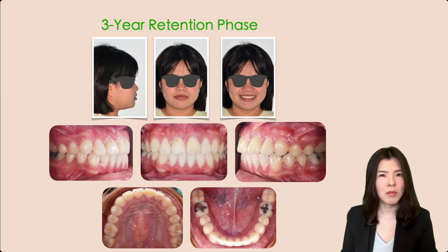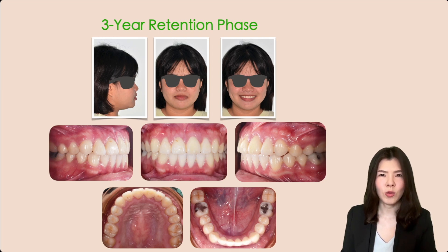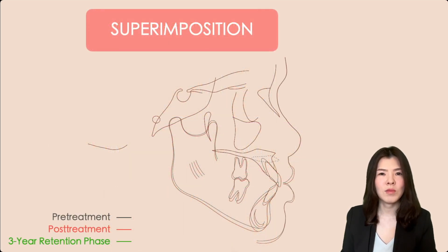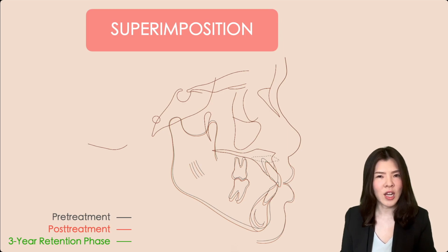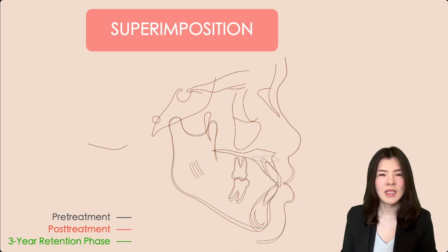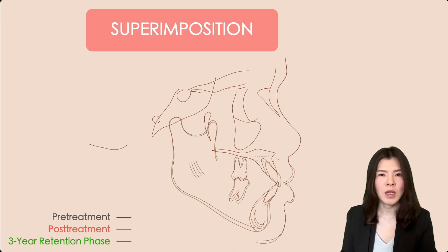Three years after active treatment, there was excellent stability of the clinical crown length of the maxillary left central incisor and no crossbite relapse. Overbite decreased minimally, owing to slight intrusion of the maxillary incisors. However, tooth display in the rest position, smile line, overjet, and overbite were all within normal ranges. Lateral cephalometric superimposition illustrates the changes after treatment: the maxillary incisors were extruded and proclined to correct the crossbite and low smile line, and minimal intrusion of maxillary incisors was shown in the three-year retention phase.